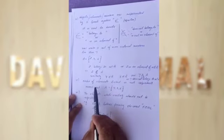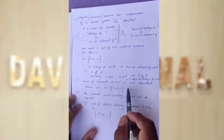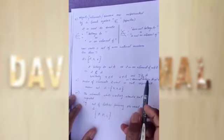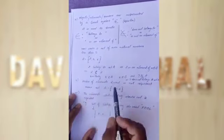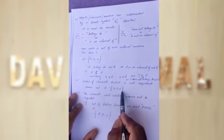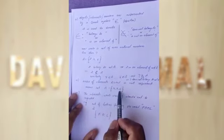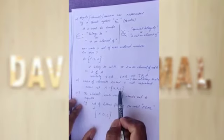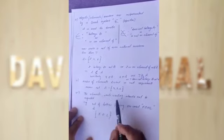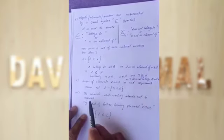The next point: the order of elements listed is not important. It means the set A can be written in different orderings and it remains the same set. The next point: elements, while writing, should not be repeated.